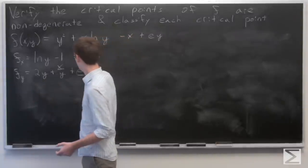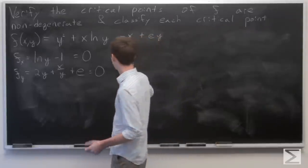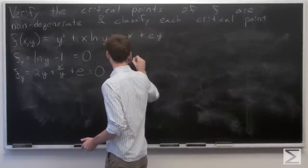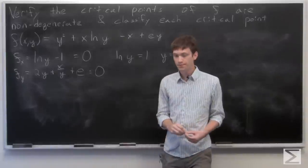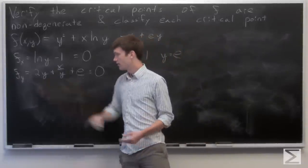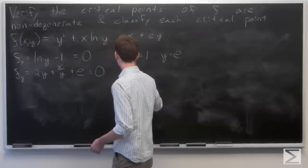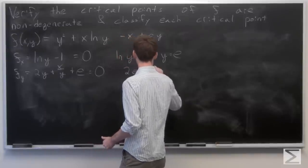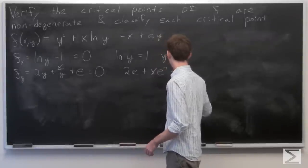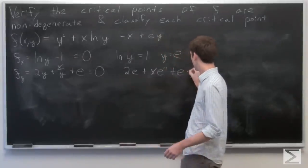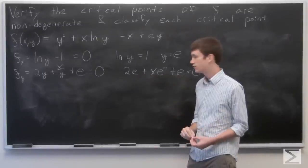Setting these equal to zero, we can solve the first equation for y. We get natural log of y equals 1, which means y equals e. Now we plug in our value for y into the second equation, and we get 2e plus x times e to the negative one plus e equals zero.